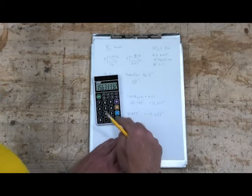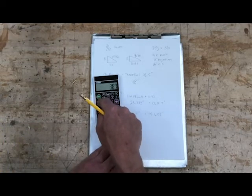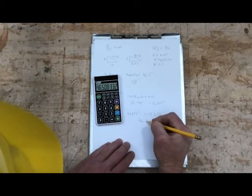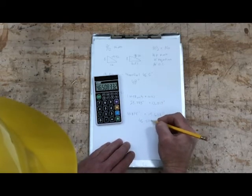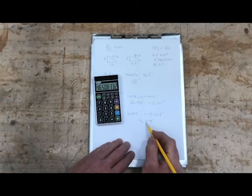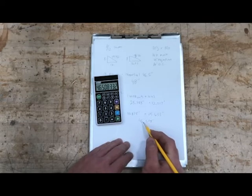Now I would add that to my 30.875, and I get 46.508 inches. Now that's how long from center of ridge to the end of projection my hip is. So I'm going to need a 4 foot piece.